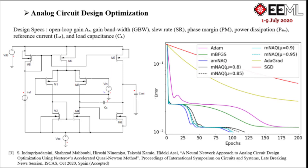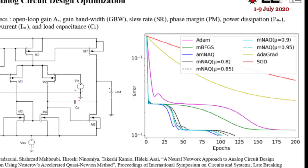Analog circuit design optimization is complex mainly due to the large search space and complex relations that exist between the design parameters and the circuit performances. In this work, we take an example of a two-stage op-amp that has eight MOS transistors and a coupling capacitor, whose optimum parameters for the desired design specification are obtained using the DNN model. Our proposed AMNAC and MNAC methods show lower performance errors compared to the other methods.